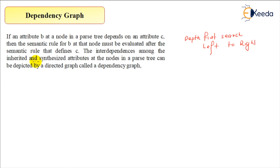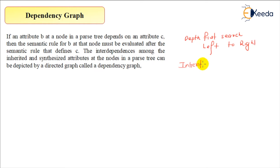We are now coming back to the dependency graph because DFS is not a useful algorithm when we are dealing with inherited attributes. When dealing with inherited attributes, I cannot apply DFS, because it doesn't take the value only from the children — the situation is it can take the value from the parent also.